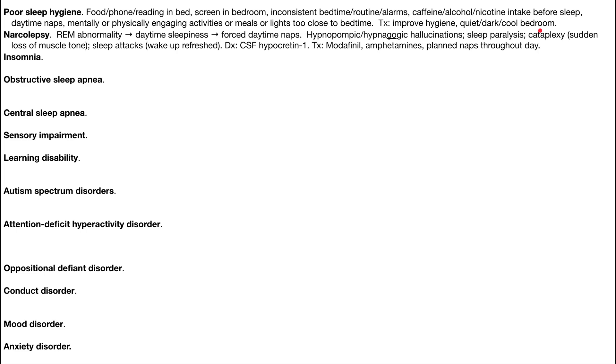Next is narcolepsy. Narcolepsy is essentially a REM abnormality that can lead to daytime sleepiness, and these people have forced daytime naps. Characteristics include hypnagogic hallucinations — when you go to sleep — and hypnopompic hallucinations as you're waking up. You also notice sleep paralysis and cataplexy, a sudden loss of muscle tone, like the dramatic person who falls asleep while walking. These people can have sleep attacks where they fall asleep briefly but wake up refreshed. A new diagnostic test is hypocretin-1 from the CSF. Treatments are modafinil, amphetamines, or planned naps throughout the day.